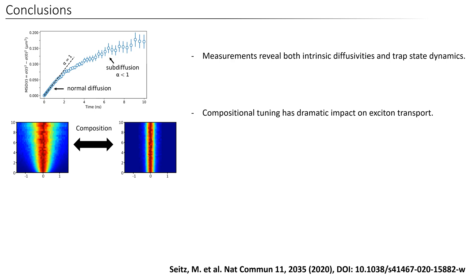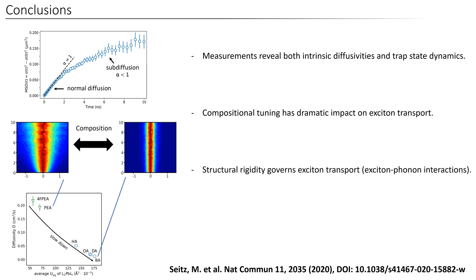This finding is extremely important as the diffusion length is one of the key parameters when designing devices such as solar cells. Additionally, the structural rigidity seems to govern the exciton transport and suggests that exciton-phonon coupling is the dominant scattering term. The atomic displacement parameter can be used as a new design parameter when choosing the perovskite material for devices, as it can be readily extracted from single crystal XRD data.